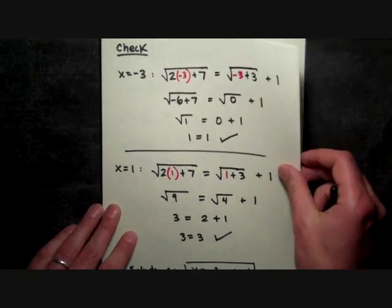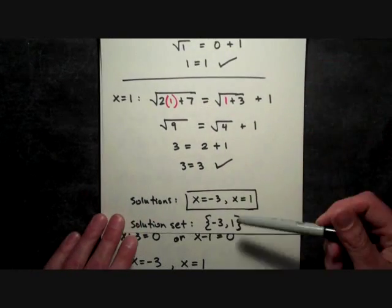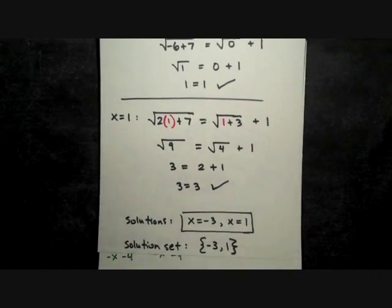So 1 and -3 are both solutions. And again, you have your two alternative methods for stating your solution sets here.